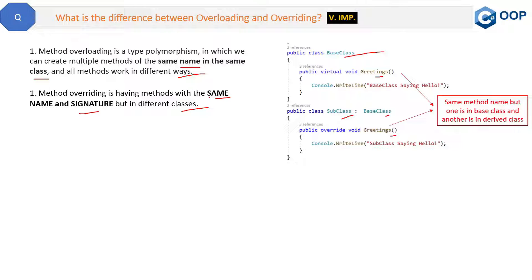So this is the first difference: in the case of overloading, the signature is different, but in the case of overriding, the signature is also the same. Here you can see the greetings methods have the same number of parameters and same return type, so the signature is the same. This is one difference.